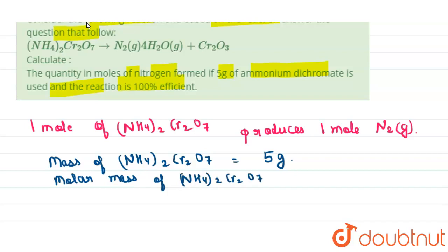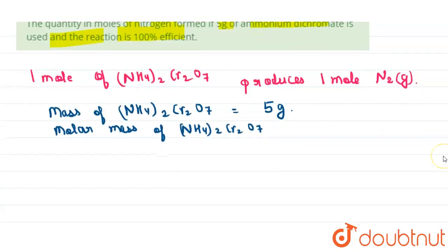...the molar mass of ammonium dichromate, then it is equal to 2 times the molar mass of nitrogen (14 or 15) plus 4 times 1 for hydrogen, plus 2 times that of chromium, which is...